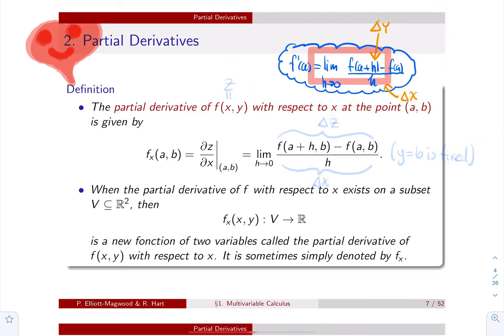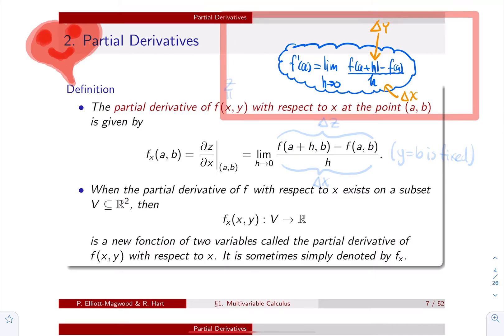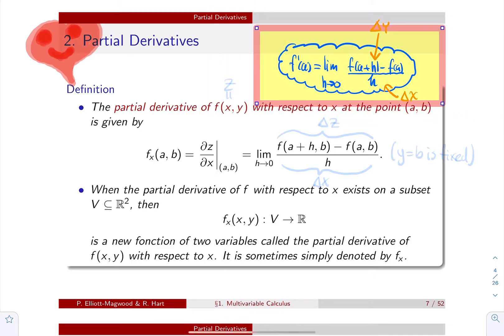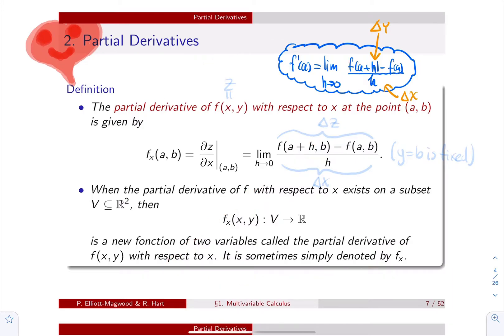For a function of one variable, there's only one way to change the input and measure how the output changes. But for a function of two variables, there are two inputs. So we can look at how the output changes by changing x or changing y. Thus, we will have two derivatives, and we call these partial derivatives of the function.